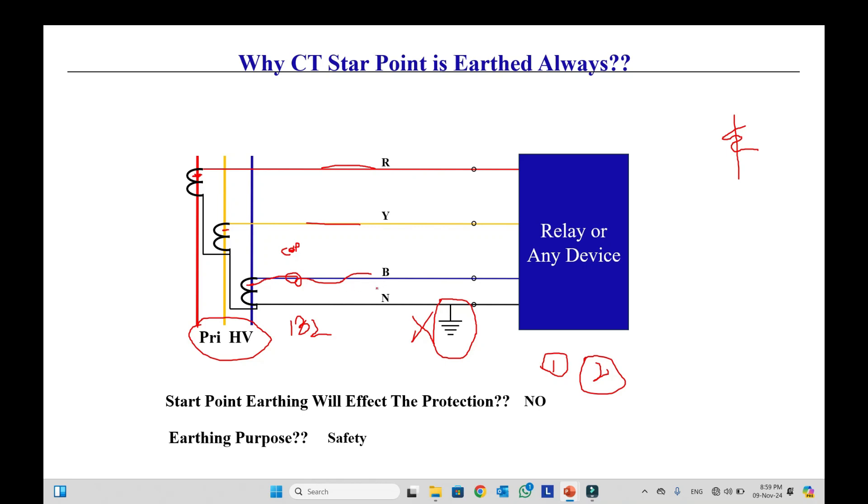And this voltage, if we do not earth it, it will remain in the circuit. And it's also not the intended purpose that CT secondary should have voltage. And it's also dangerous for the relay and also not good for protection or any device connected to the CT. So with the earthing, this voltage will drain out, and there will be no voltage in the CT secondary side.